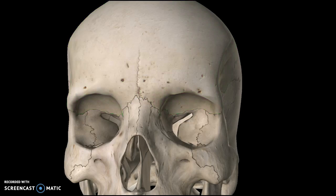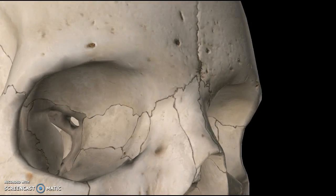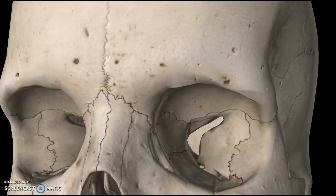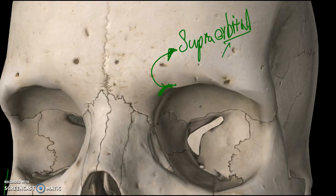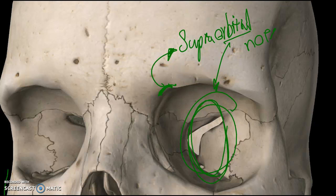The next structure to talk about is the foramen or the notch, depending on the person. In this model we are seeing a notch right here. This notch is known as the supraorbital notch — 'supra' meaning superior. There's a reason I'm pointing out 'supra,' because in the next tutorial you'll see there's an 'infra' version of the same structure. It's called supraorbital because 'orbital' refers to the eye socket, and this notch is right above it. In some anatomy books there's a hole here instead, which would be the supraorbital foramen — it varies depending on the person.